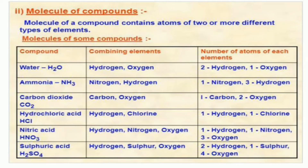Molecules of compounds contain atoms of two or more different types of elements. Water H₂O has two hydrogen and one oxygen, giving three atoms total. Ammonia NH₃ has one nitrogen and three hydrogens combining together. Carbon dioxide CO₂ has one carbon and two oxygens, giving three atoms total. Hydrochloric acid HCl consists of hydrogen and chlorine — two atoms. Nitric acid HNO₃ consists of one hydrogen, one nitrogen, and three oxygens combining together.